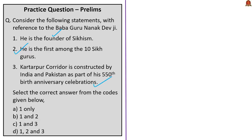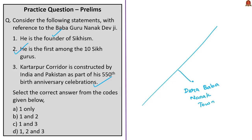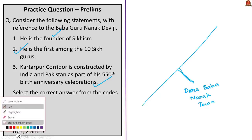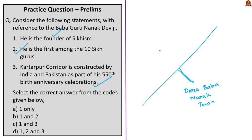From the Indian side, the Kartarpur Corridor starts from Dera Baba Nanak town in Gurdaspur district in Punjab till the international border between India and Pakistan. From Pakistan's side, the corridor extends from the international border to connect the Gurdwara Darbar Sahib in Kartarpur in Pakistan. All three statements are correct, so the answer is option D: one, two, and three.